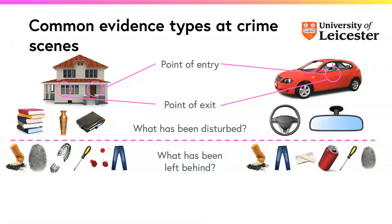The same sort of things apply in the vehicle as well. What's been left behind? You might find that the offender, whilst driving the vehicle, has a drink from a can or a bottle and discards it in the vehicle, or chews gum and then spits it out in the vehicle footwell.